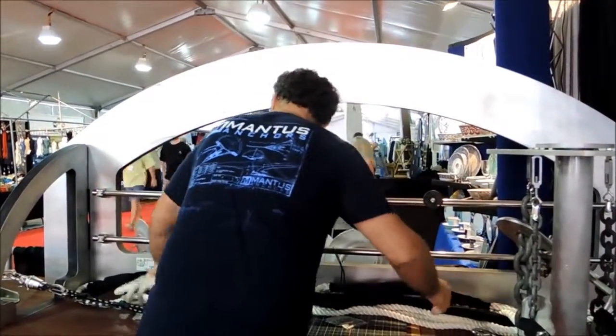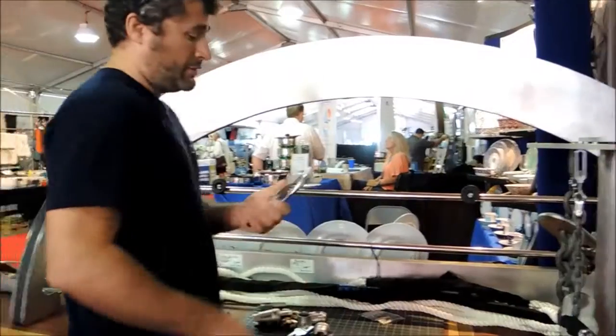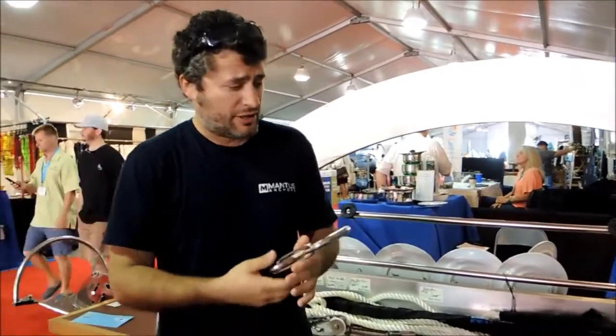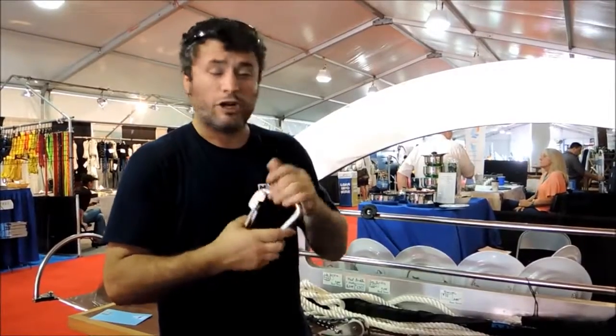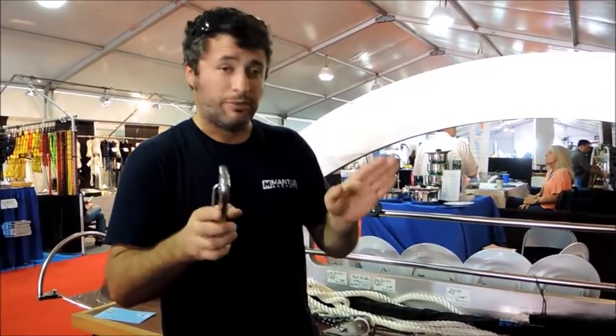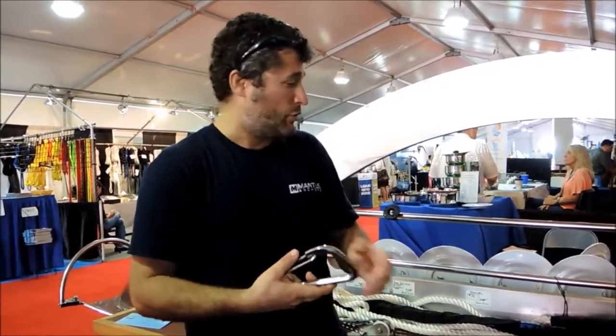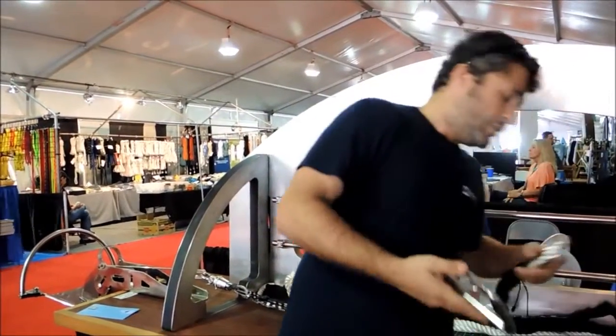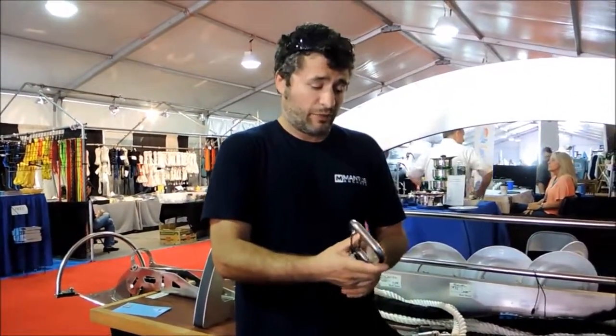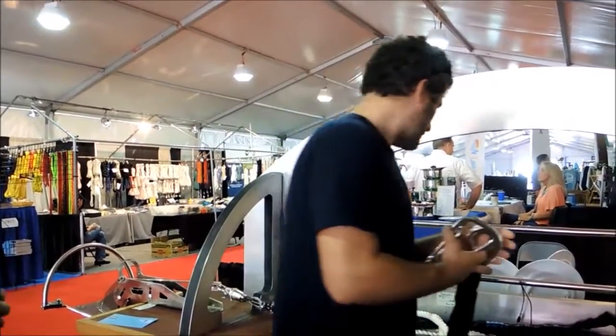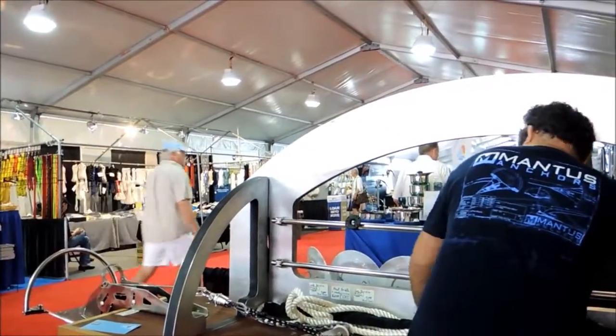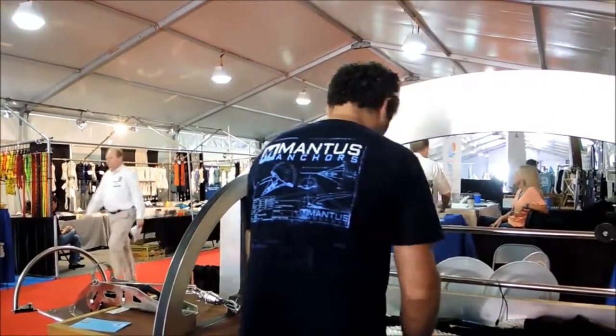What we include with it is a carabiner. The idea of the carabiner is that if you're coming up to a mooring, instead of anchoring, you would just attach a carabiner, the shackle, to the end of the bridle, and you can pick up your mooring ball really easy.